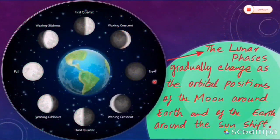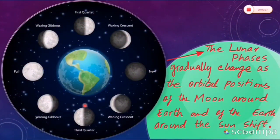Here the lunar phases are shown. It can be seen that these phases gradually change as the orbital positions of the moon around the earth and of the earth around the sun shift.